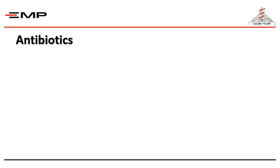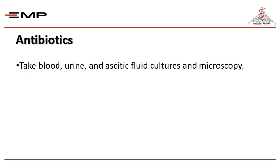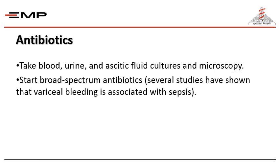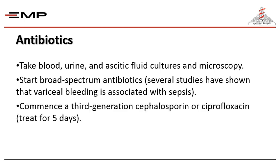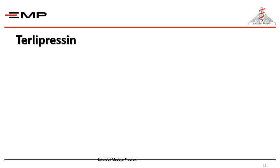Regarding antibiotics: bacterial translocation, spontaneous bacterial peritonitis, and hepatic encephalopathy are serious and common complications. Early commencement of proper antibiotics can effectively prevent these complications. We take blood, urine, and ascitic fluid cultures and microscopy first, before starting broad-spectrum antibiotics, because several studies have shown that variceal bleeding is associated with sepsis.